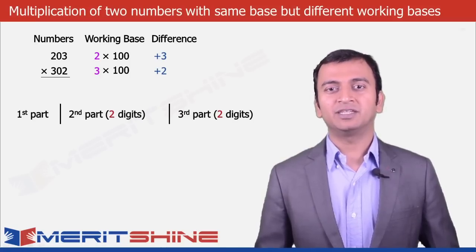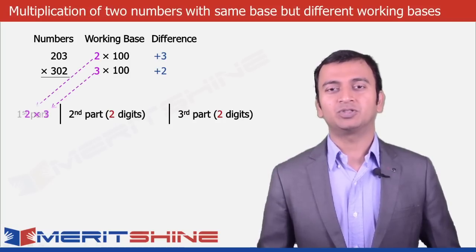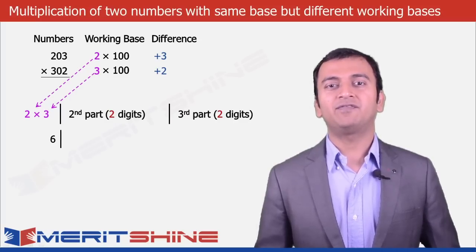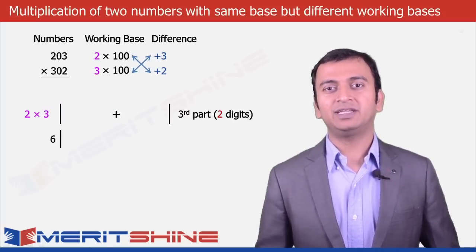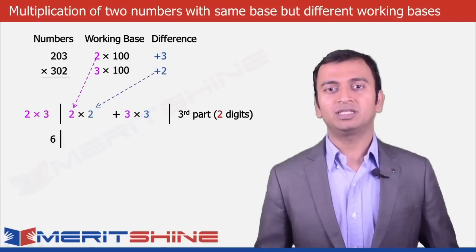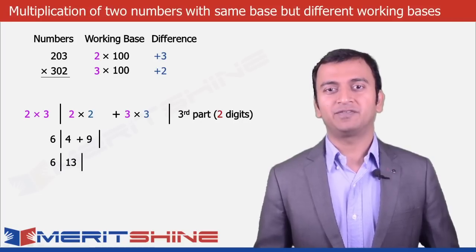We can now proceed to write down our answer, which would be in three parts. The first part would be the simple product of the multipliers, which is 3 into 2, giving 6. The second part would be the sum of the products of the first multiplier and second difference, and second multiplier and first difference, which would be 3 into 3 plus 2 into 2, that is 9 plus 4, giving 13. And the third part would be the simple product of the differences, which is 3 into 2, giving 6.